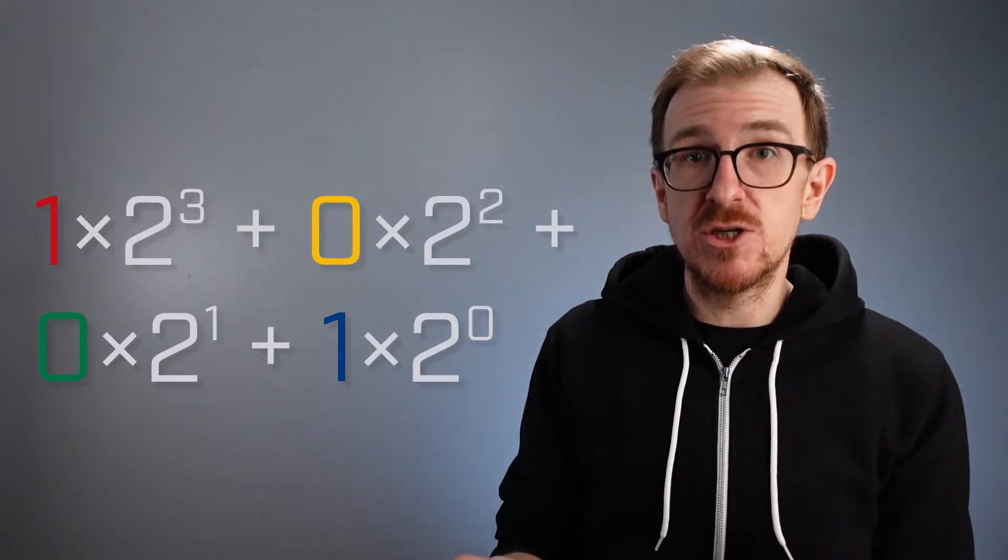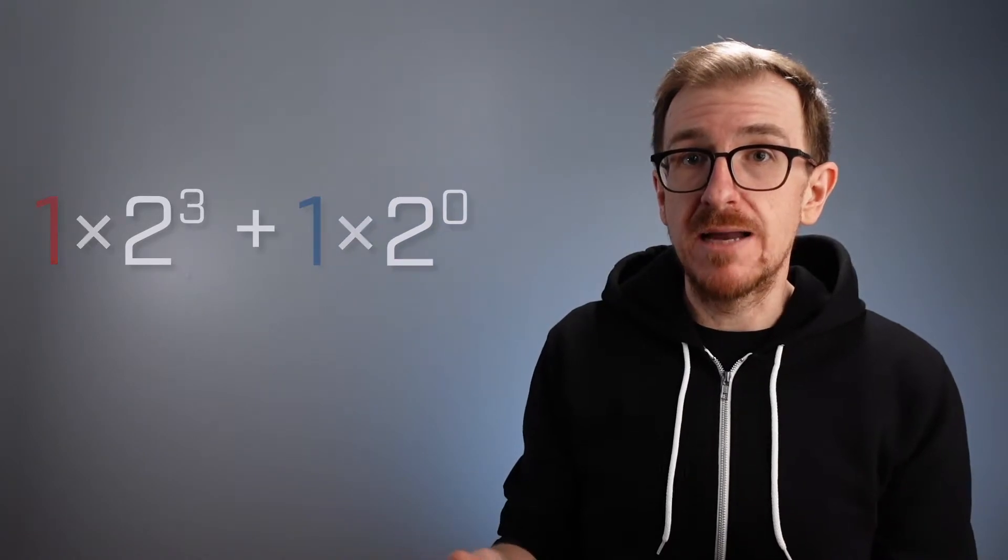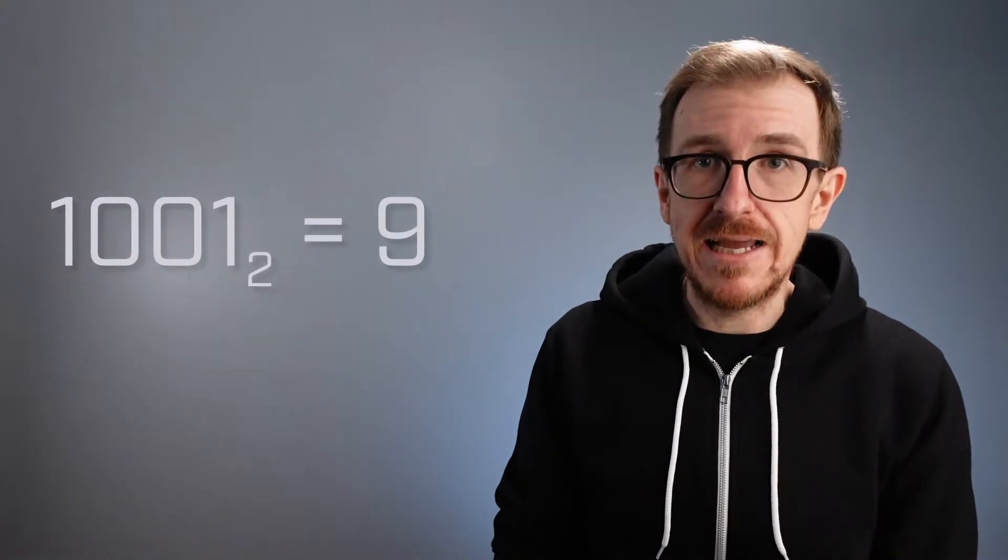Next, we simplify the expression by removing the terms that are multiplied by 0 and simplifying the powers of 2. Finally, we add the terms together to get the final result. With the process complete, we see that the binary number 1001 is equivalent to the decimal number 9.